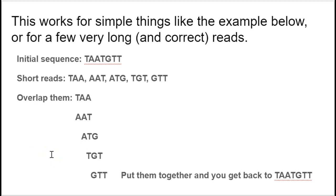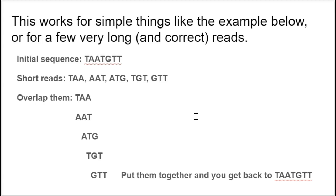Overlap consensus assembly works really well if you have just a very few reads. With a small set, we can stack them up, see how to orient them, and get back to the original sequence — that's overlap-based assembly working pretty well. This also works well if you have really long and very correct reads. The technology that gives you long and correct reads is the original Sanger sequencing. And hopefully, things like Nanopore tech will be long and correct — right now, they're just really long.